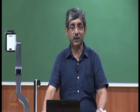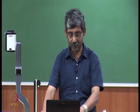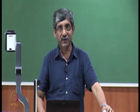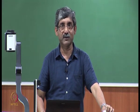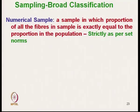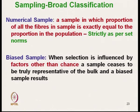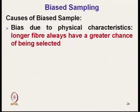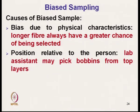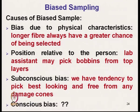Hello everyone. We will continue with the sampling of textile material. Last class we discussed the broad classification of sampling — broadly classified into two categories: numerical sampling and biased sampling. Biased sampling is mainly length-biased, and the causes of biasedness include physical characteristics of material, position relative to the person, subconscious biasness, and conscious biasness.